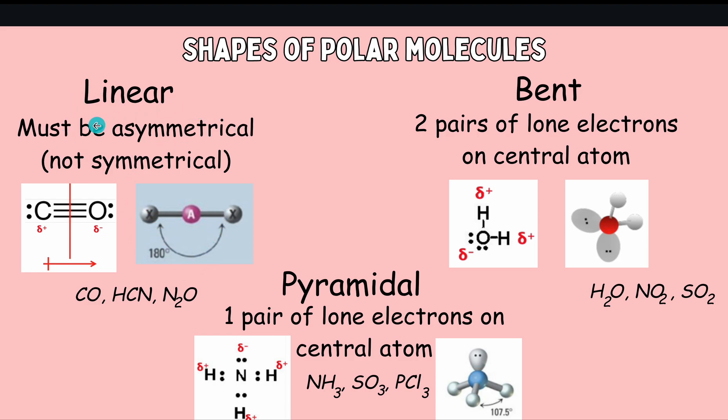In order for a linear molecule to be polar, it must be asymmetrical. Let's look at this example of carbon monoxide. So we have a carbon and oxygen triple bonded together. If you were to try to slice this molecule in half, you would see that it can't be symmetric, because there's two different atoms on each side. So this is what we would call a polar molecule.